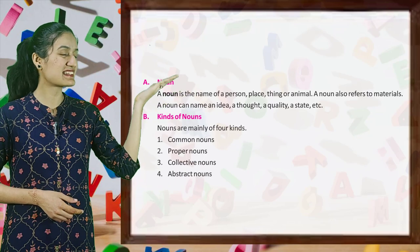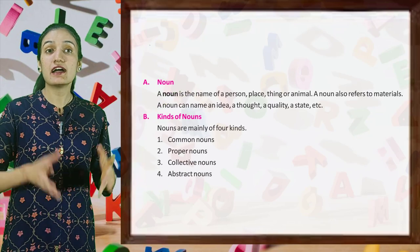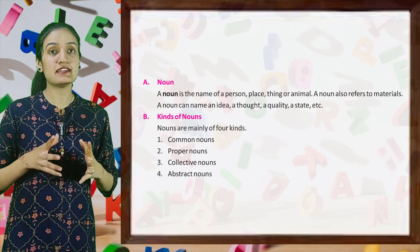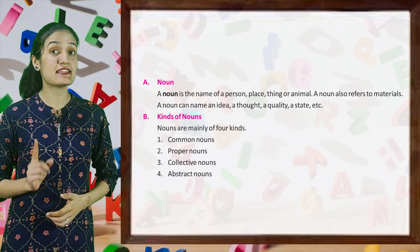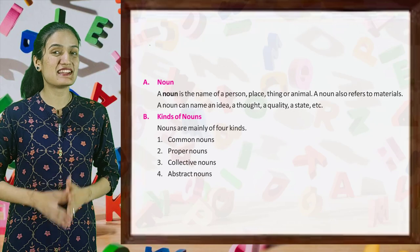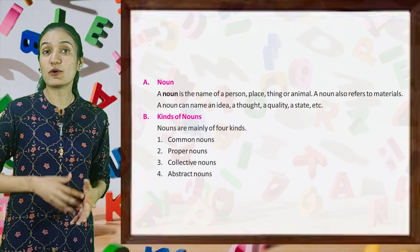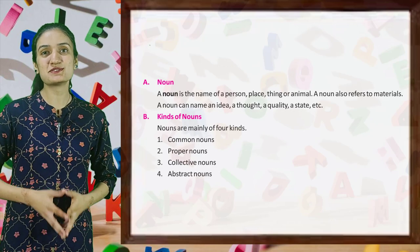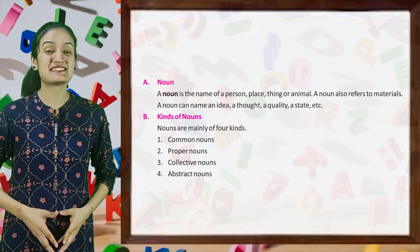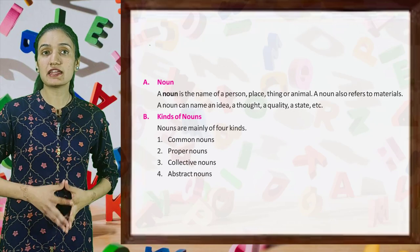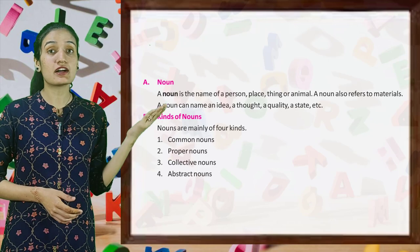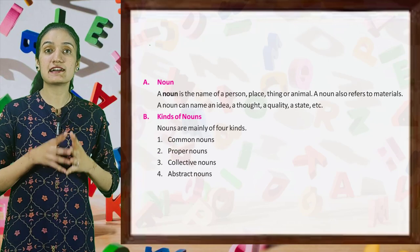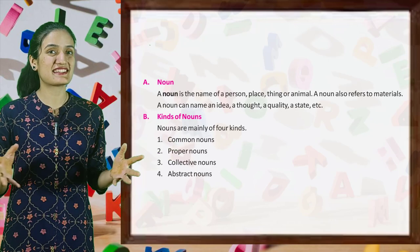So let's begin. A noun is the name of a person, place, thing or animal. A noun also refers to materials. A noun can name an idea, a thought, a quality, a state, etc.